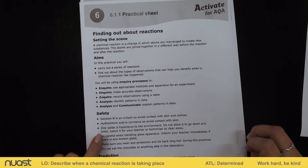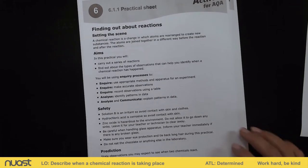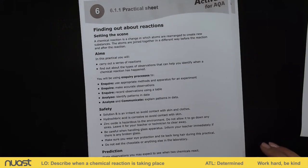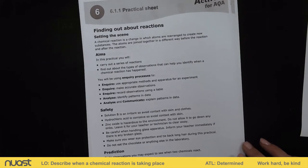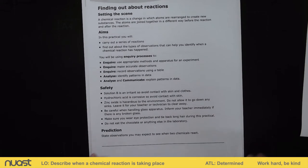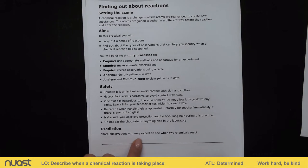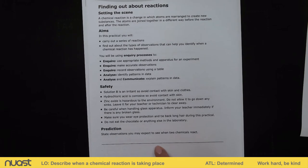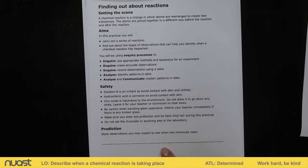We've spoken through our aims and we've got a little section on safety. I'm going to have my hair up because we're going to use a Bunsen burner, and I'm also going to be wearing goggles because we're going to be using some acids. The first task is the prediction: state observations you might expect to see when two chemicals react. List anything you might see when a chemical or physical change happens — a minimum of three things. Pause the video here and spend a minute doing that.